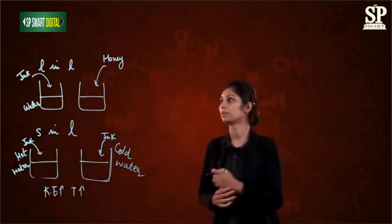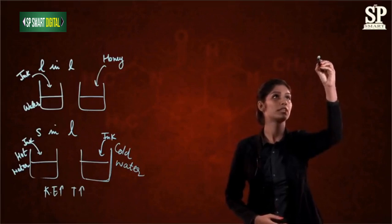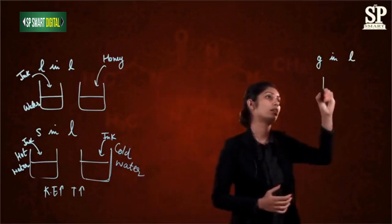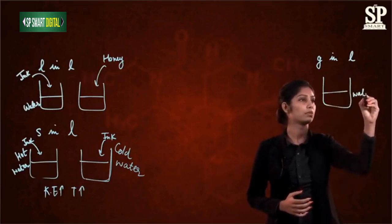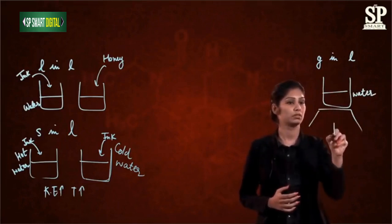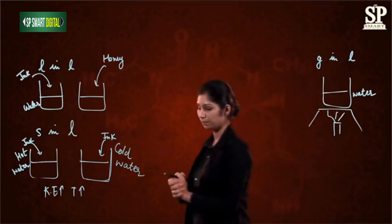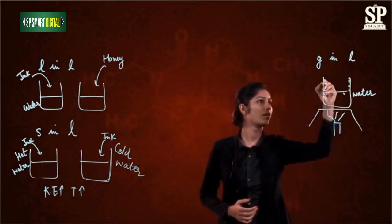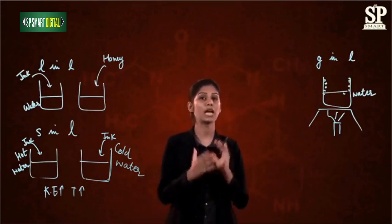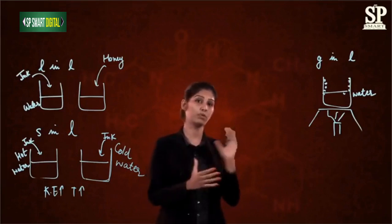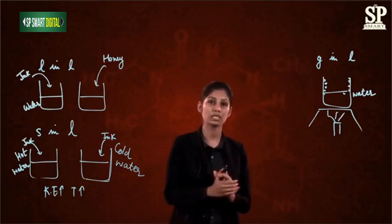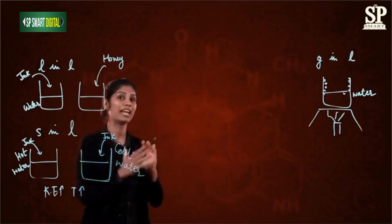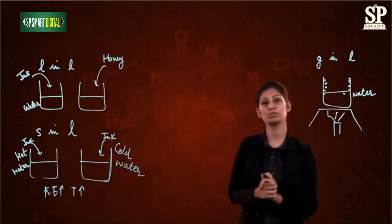Now let's discuss diffusion of gases in liquid. Take a beaker of water and heat it at a very low flame. After some time, you will notice tiny bubbles coming out — these are bubbles of oxygen and carbon dioxide. This means that before boiling, the oxygen and carbon dioxide had diffused and dissolved in the water. This is one reason why aquatic animals and fish survive — oxygen and carbon dioxide diffuse into water and they can obtain it from there.